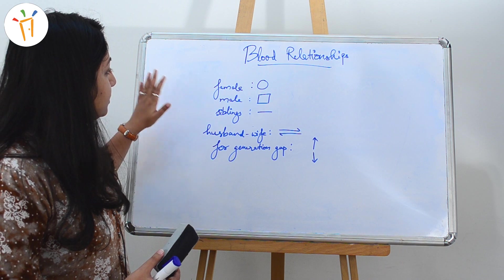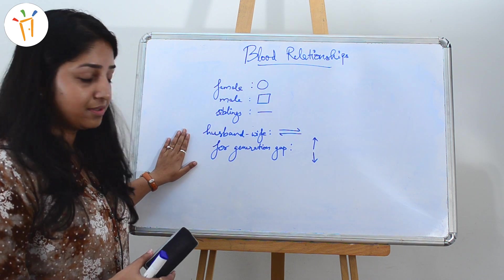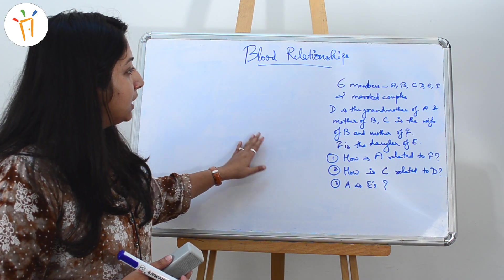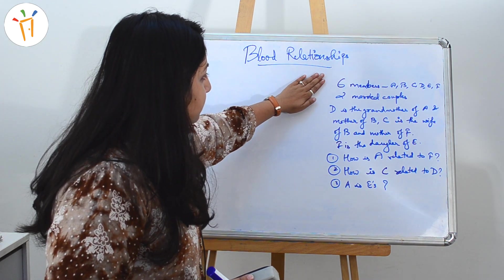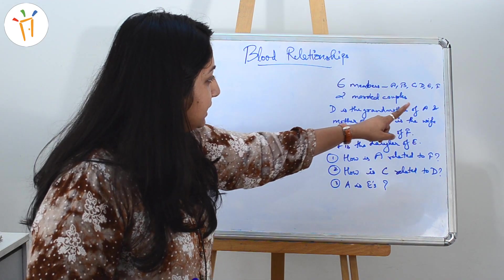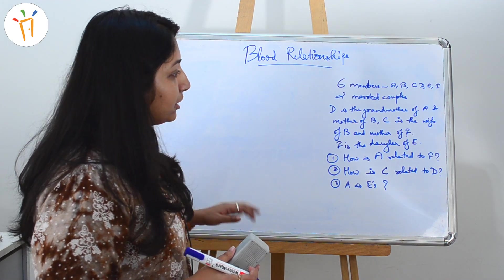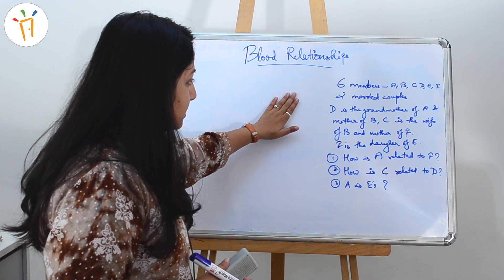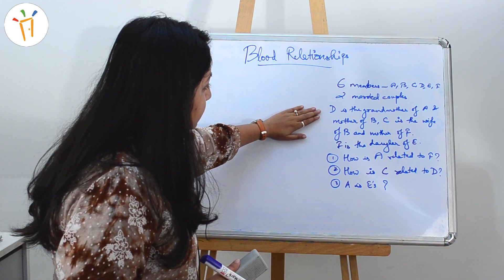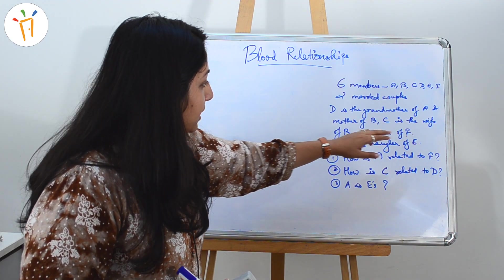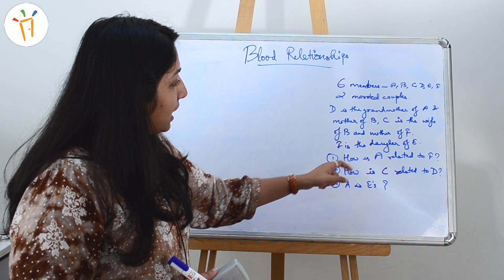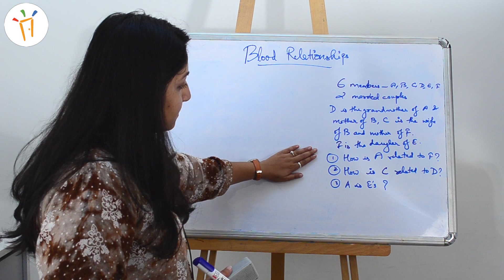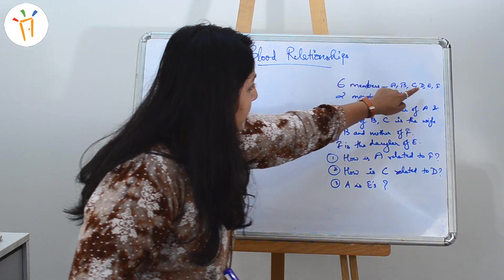Let's move on to our first problem. In a family there are six members: A, B, C, D, E, and F. In that family there are two married couples. D is the grandmother of A and mother of B. C is the wife of B and mother of F. The question is: how is A related to F, how is C related to D, and what is the relationship between A and E?